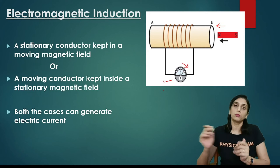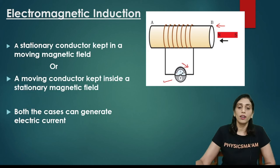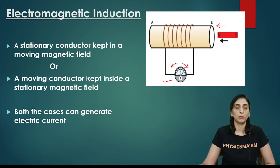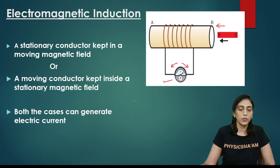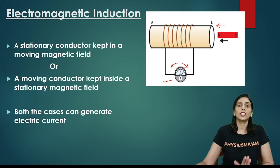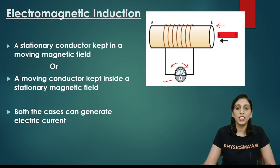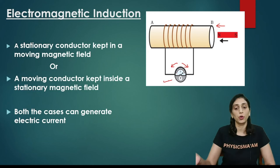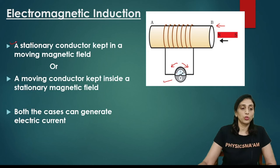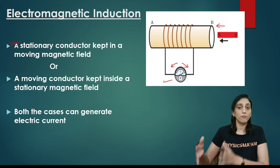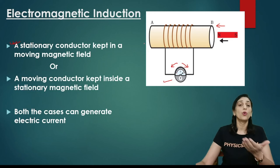Suppose the magnet moves further — then it will show that the deflection is in the other direction, towards the left. And this will keep happening as long as we are moving the magnet. When the magnet is stationary, the deflection is zero, which means that no current will be induced. So just like the magnet is moving either towards the coil or away from the coil, current will be induced. This is the condition where the conductor is stationary and the magnetic field is changing — the changing flux linkage induces the current.